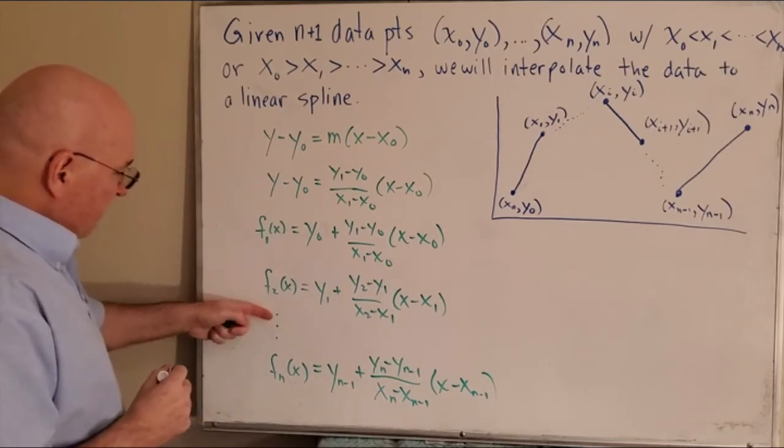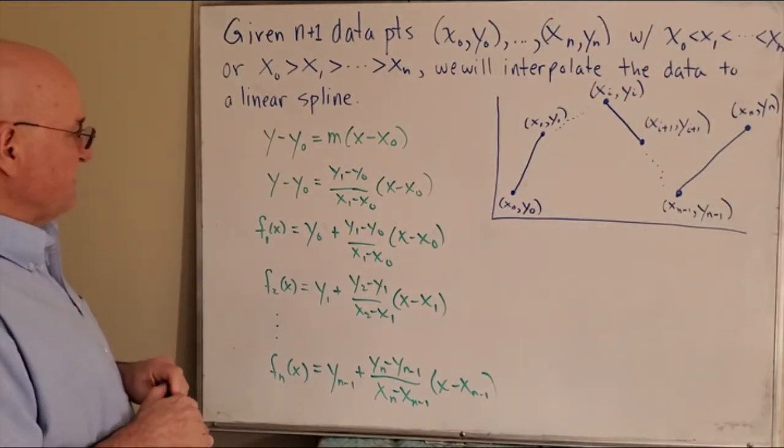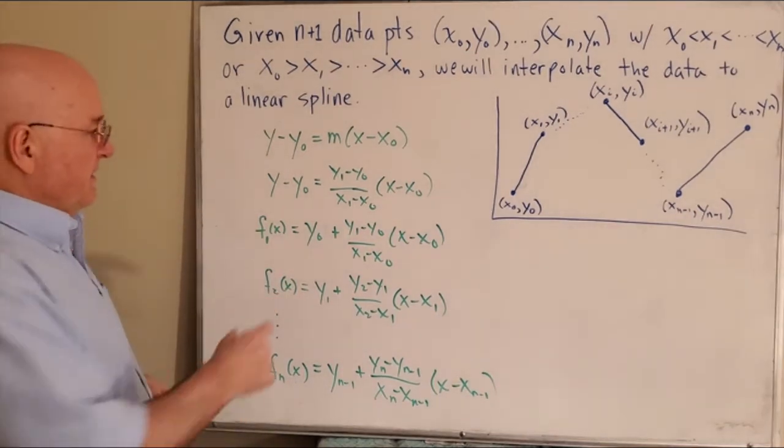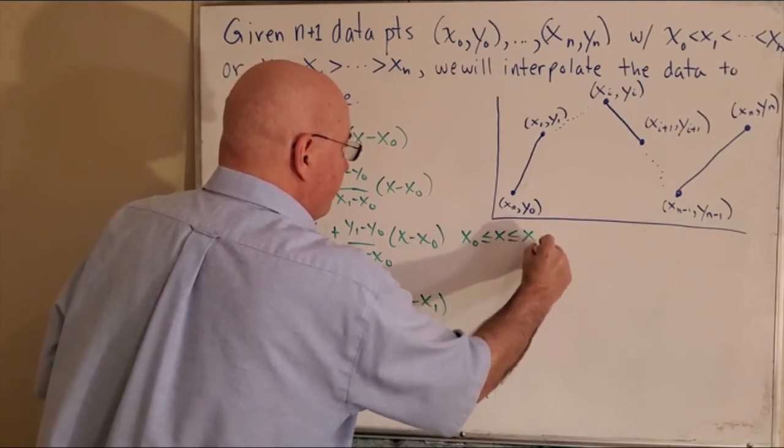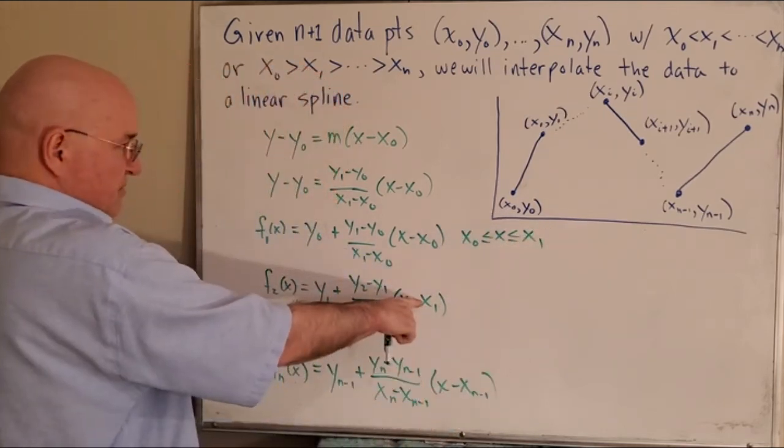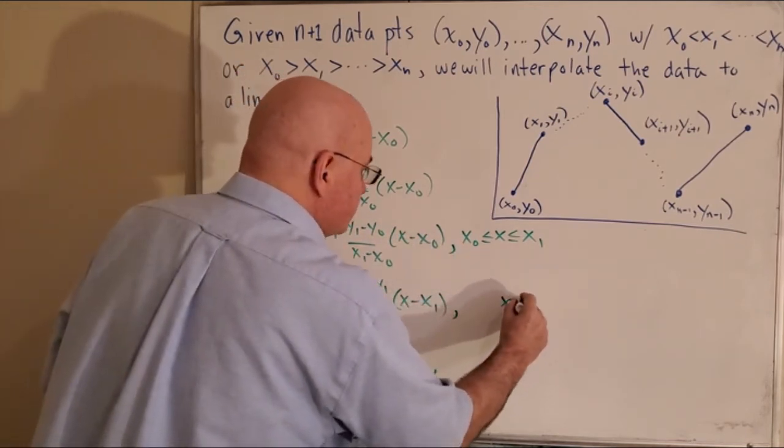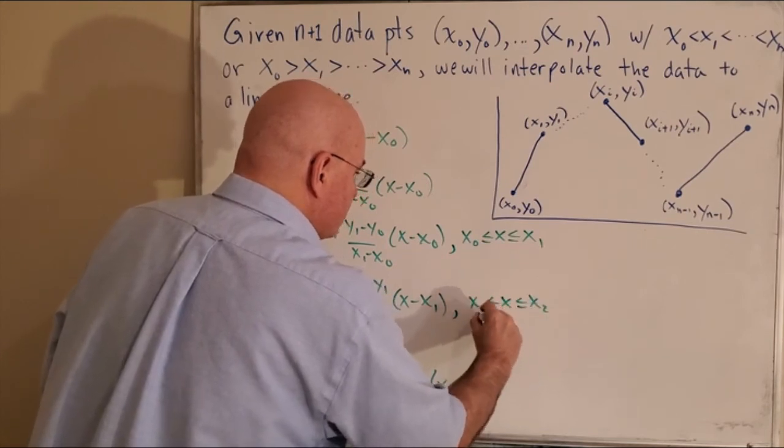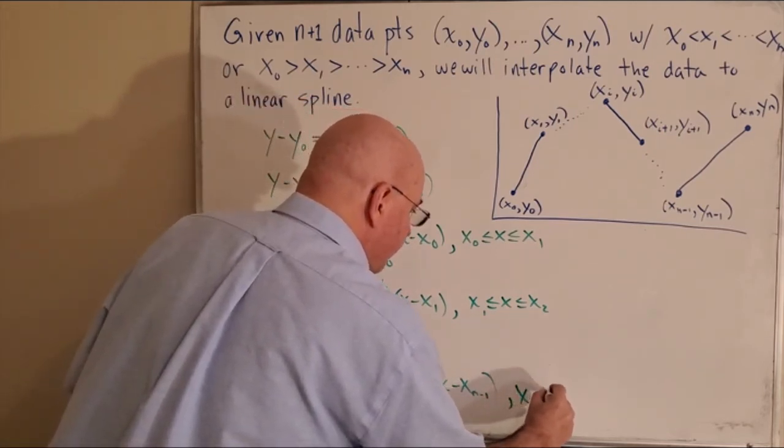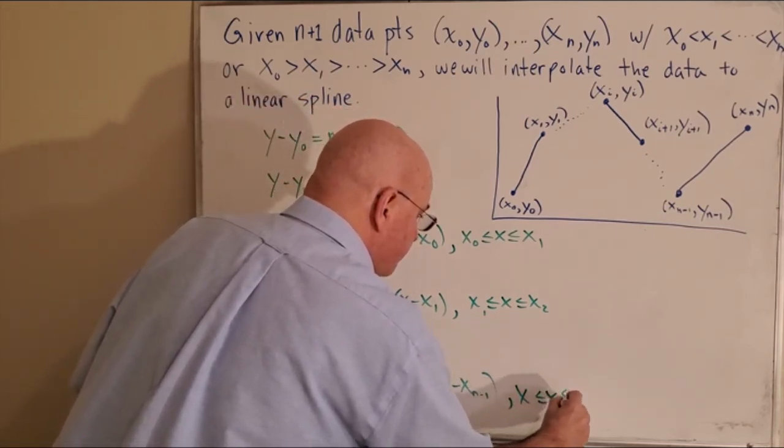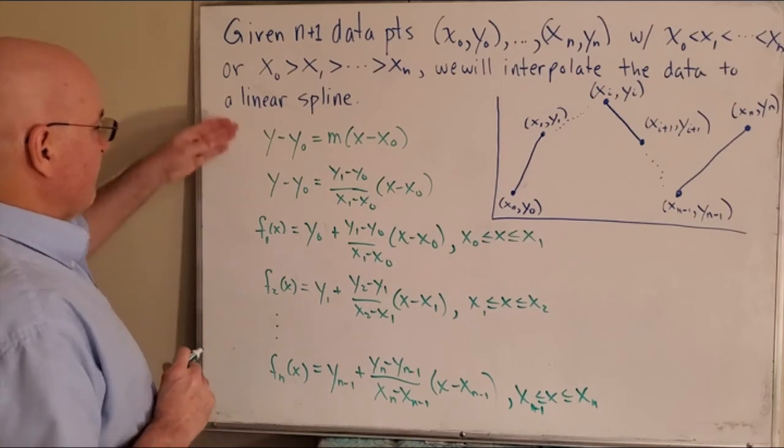So we've kind of covered with this dot, dot, dot, all of the functions, but we need to specify when you define a piecewise function like this, where it's valid. So this one is valid when x is in between x0 and x1. This is the function you use. I'll put a comma there. This is the function you use when x is in between x1 and x2. And the very last one, well, that's valid between xn minus 1 and xn. So we've covered all of the bases.